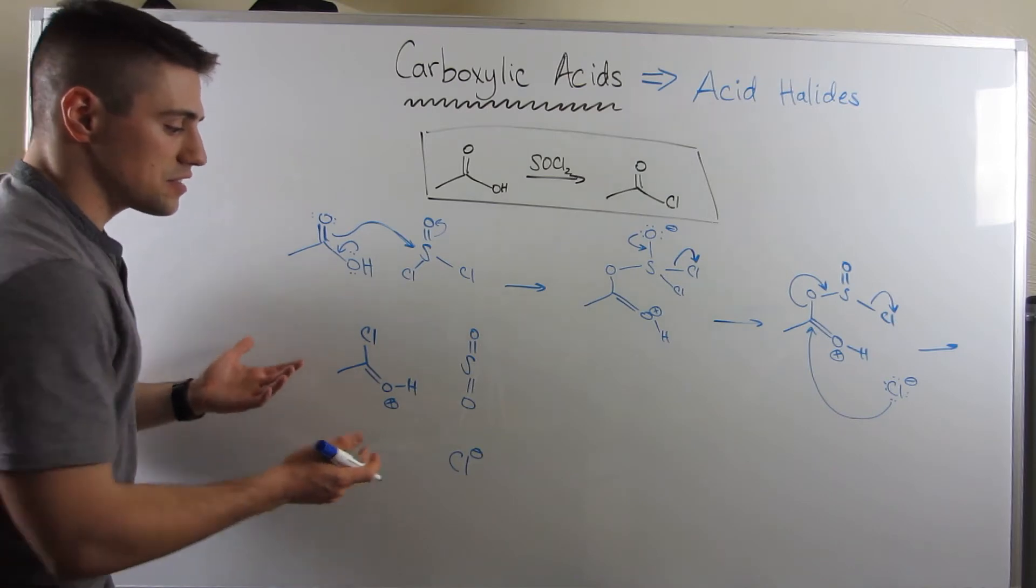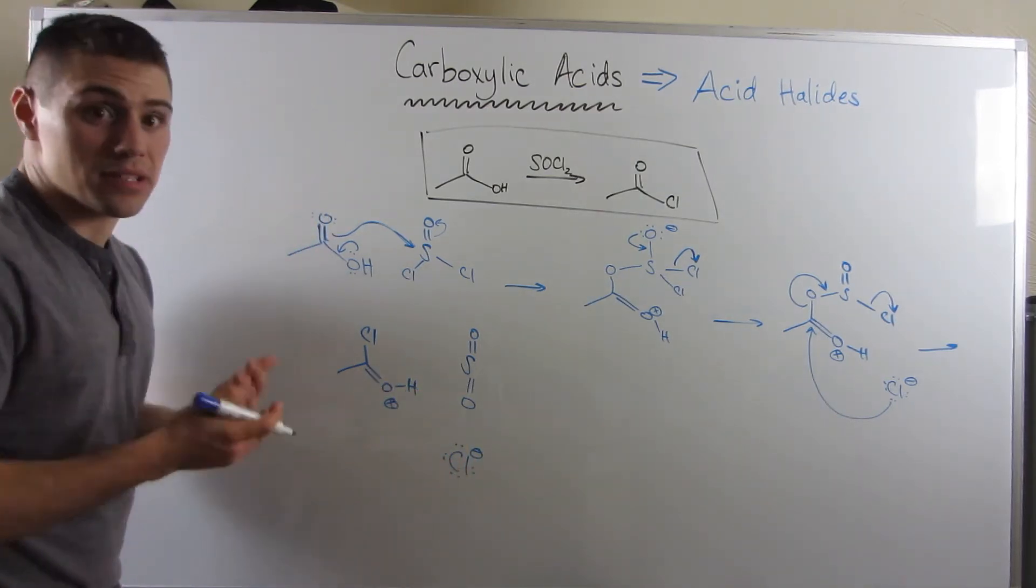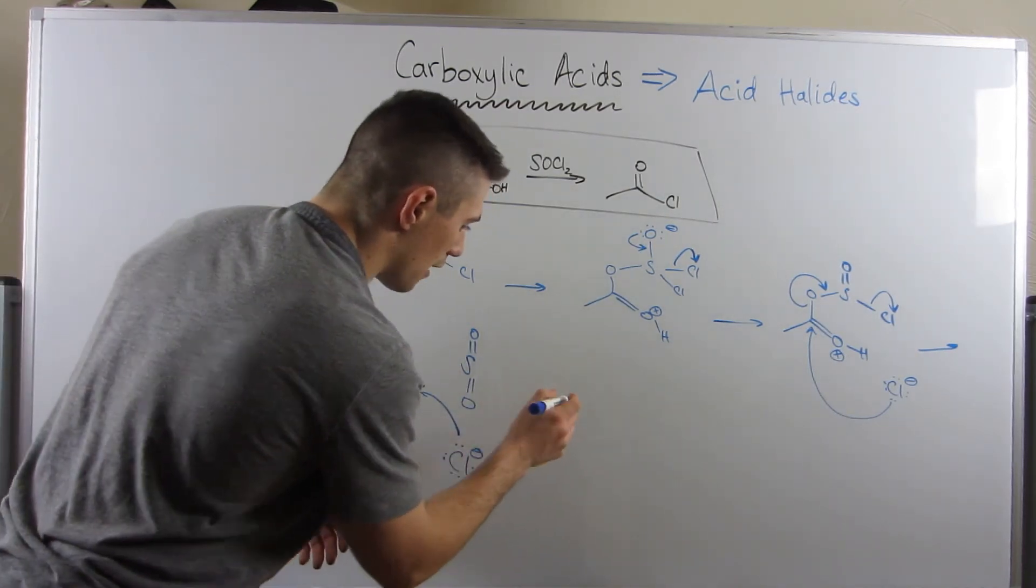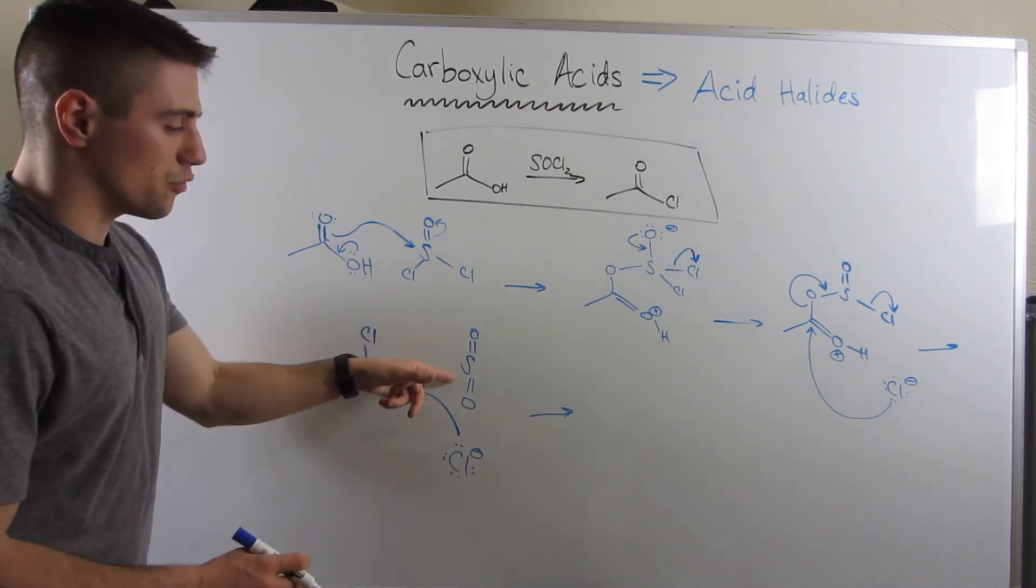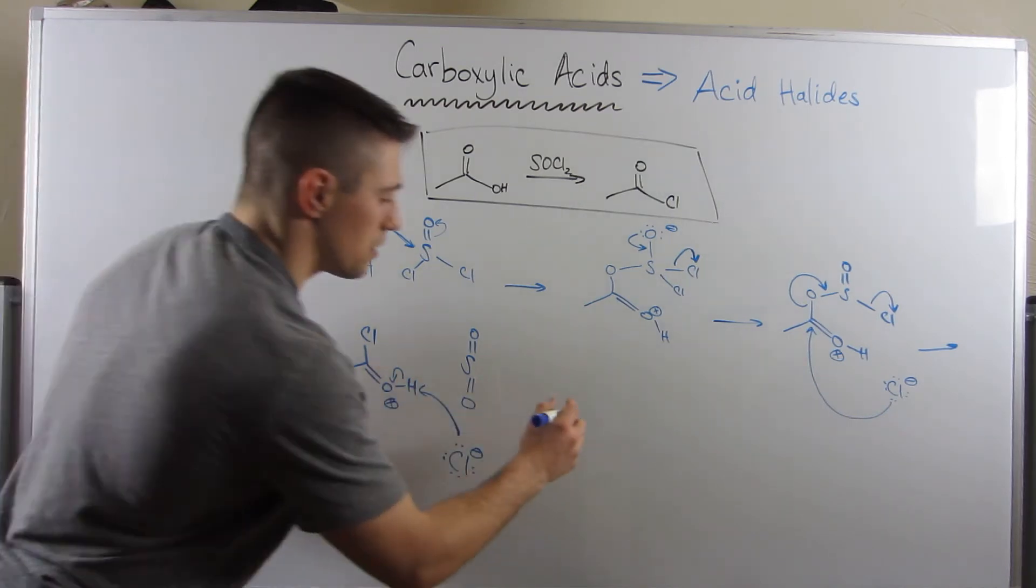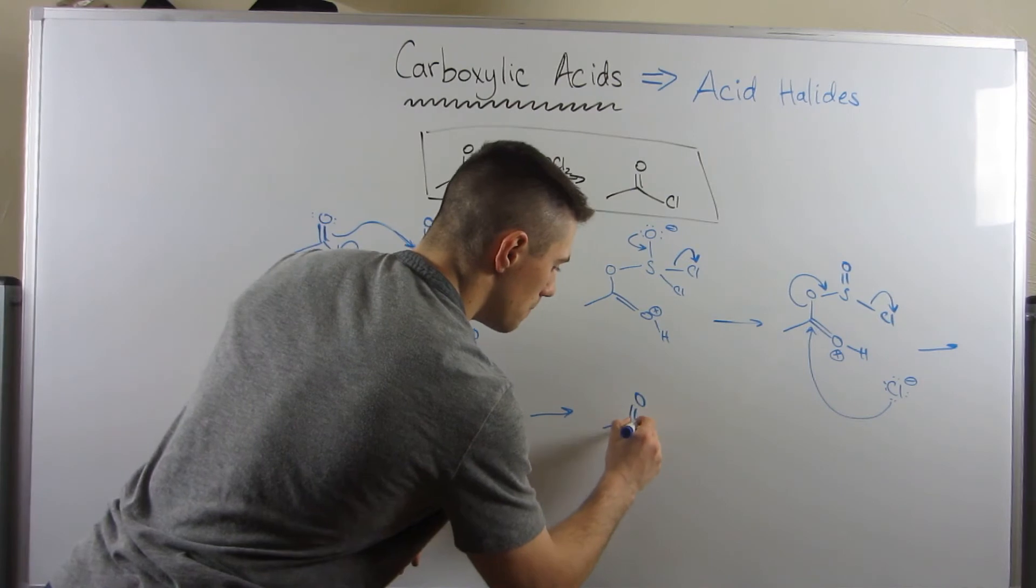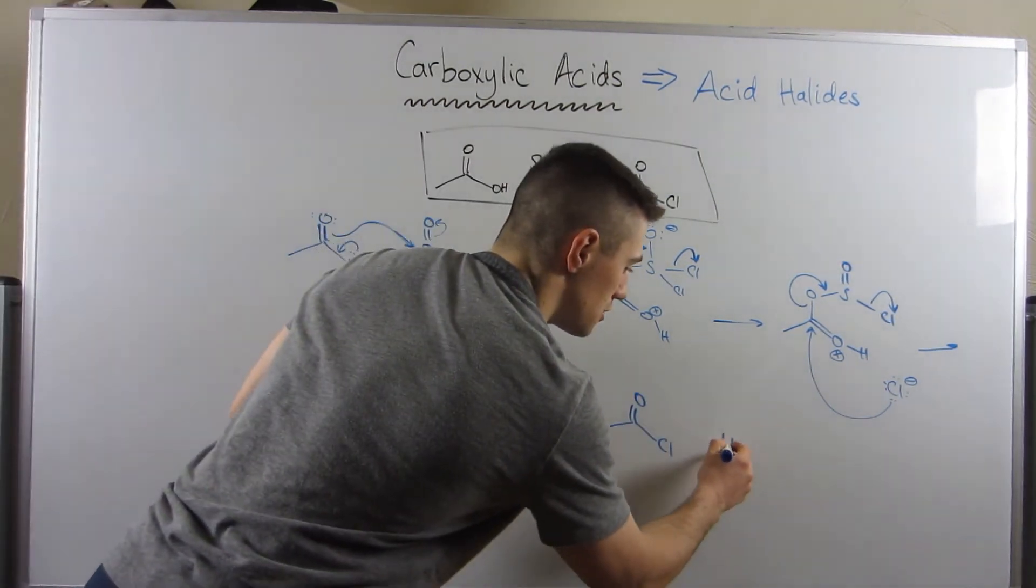So if you want to think of it like this, we have a Cl- down here. We need a cleanup step with that hydrogen. He can kind of snag him. And think about what we have. Let's discard this sulfur dioxide. We don't really care about him. But now, what this leaves us with is, if I draw him just right side up, our acid chloride, and the resulting HCl.